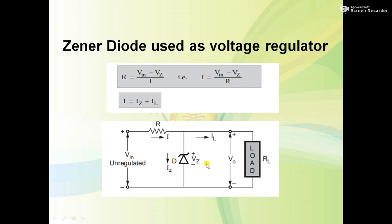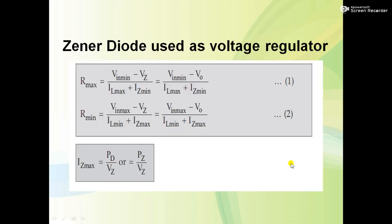This circuit is operated under two cases. Case one: keep Vin constant and vary RL. Case two: vary Vin and keep RL constant. These are the design values used to calculate R maximum, R minimum, and Iz maximum. Vin minimum means the minimum input voltage, Vin maximum means the maximum input voltage, Vz is the Zener voltage, and PD is the power dissipation divided by Vz.